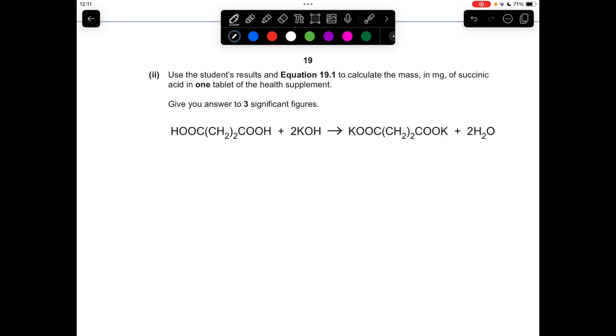So we're moving on to the calculation now. The first thing we do is work out the moles of potassium hydroxide used in the titration. So that's concentration times volume. Remember the volume's got to be in decimeters cubed, so 1.35 times 10 to the minus 3.